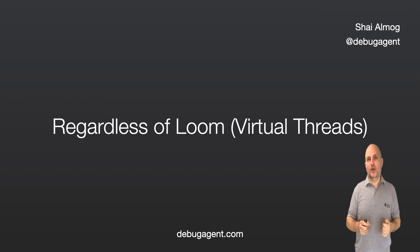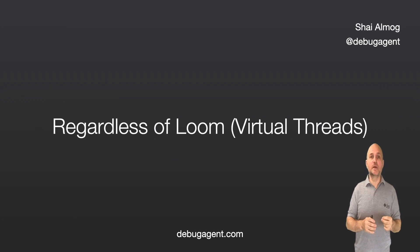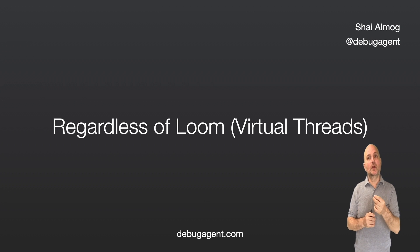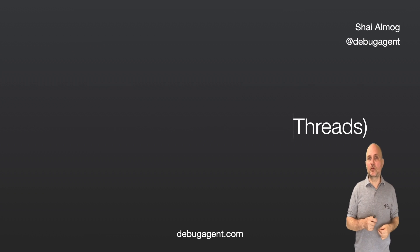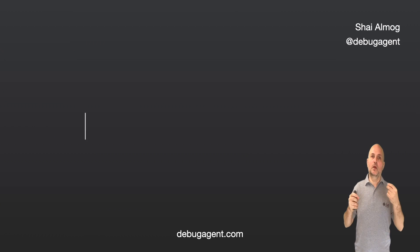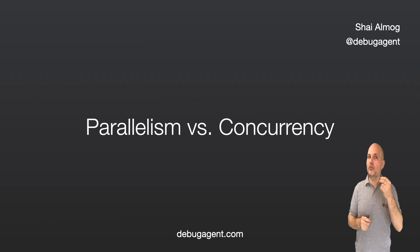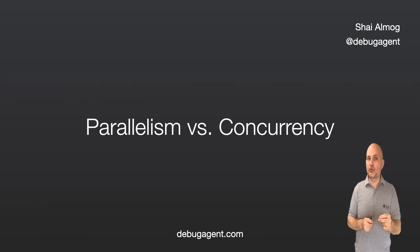Project Loom is great — I talked about it in a previous video in this series. This video discusses thread primitives that will be useful whether you use Loom or native threads; both would benefit from such abilities. Before we proceed, there are a few things we need to understand about parallelism, concurrency, and multi-threaded programming.